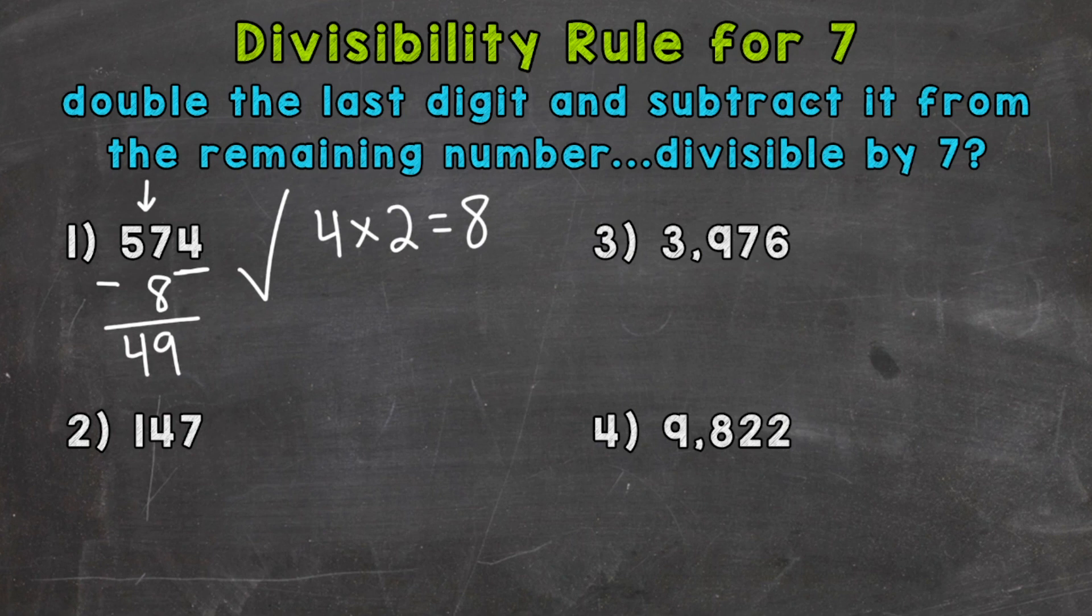The last digit is 7. Let's double it. So 7 times 2 equals 14. Our remaining number is 14 here. So 14 minus 14 gives us 0.